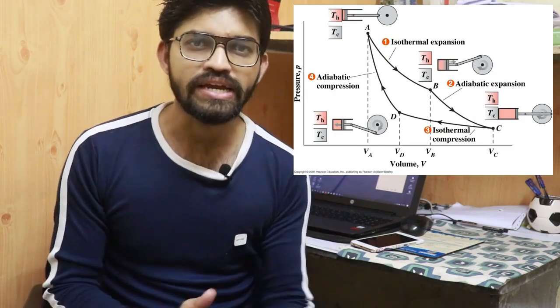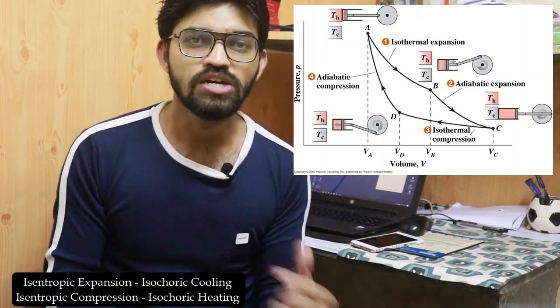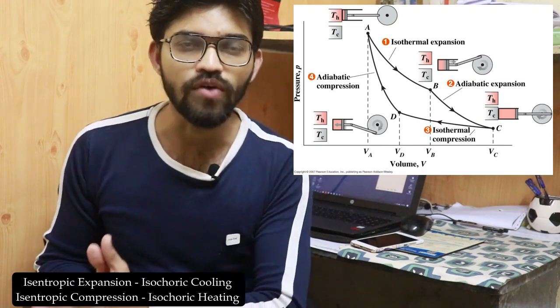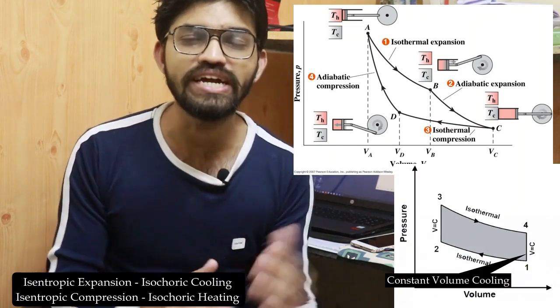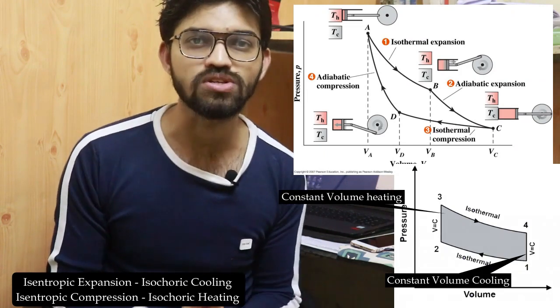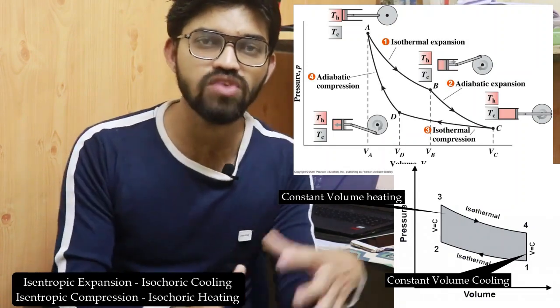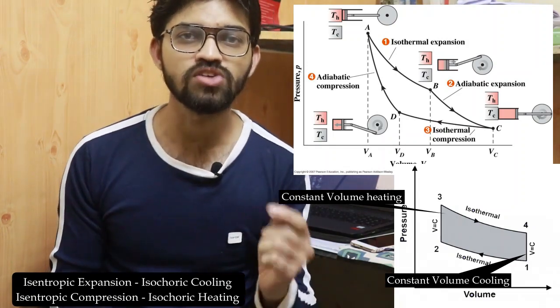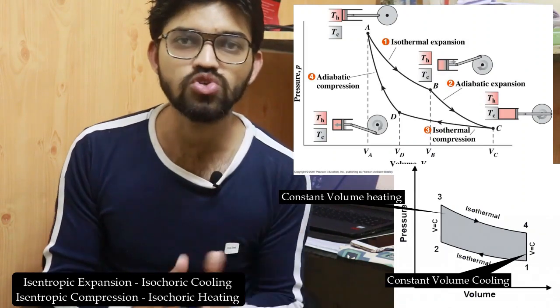In the Sterling cycle, the isentropic expansion and isentropic compression are replaced by isochoric cooling and isochoric heating — that is, constant volume cooling and constant volume heating processes. So the Sterling cycle is essentially the same as the Carnot cycle, but with those two isentropic processes replaced by isochoric heating and cooling.